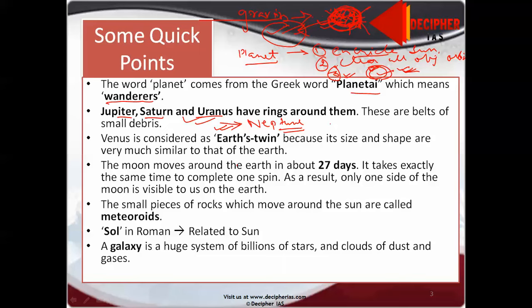The moon moves around Earth in about 27 days. It takes exactly the same time to complete one spin. Thus, only one side of the moon is always facing the Earth.